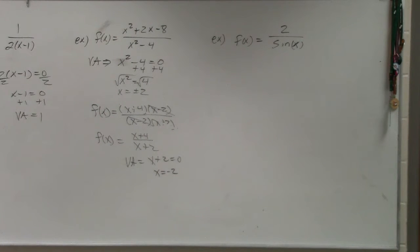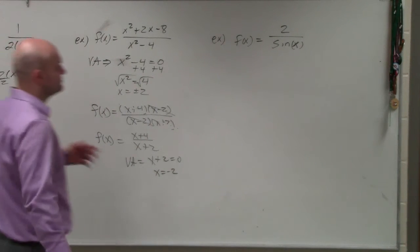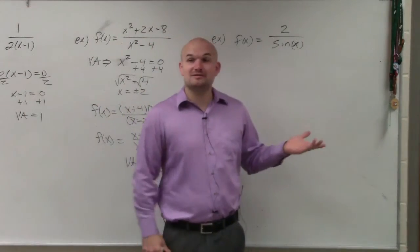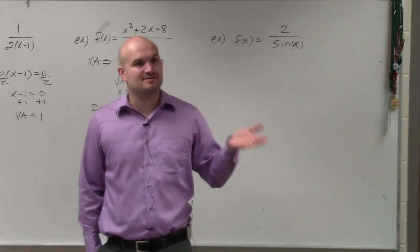So in trig, again, just think about vertical asymptotes. Vertical asymptotes are where the graph is not defined, right?